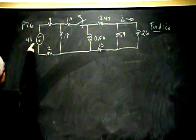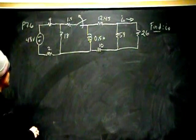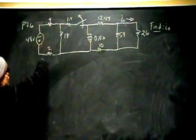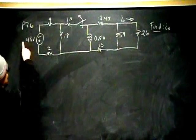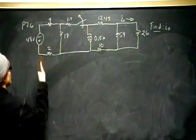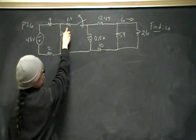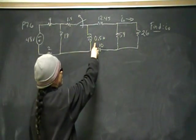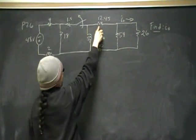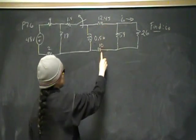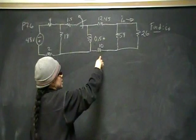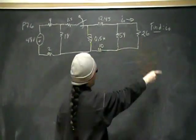So we have a 48 volt independent voltage source going in this direction, so that's really negative 48 volts in that direction. And this is 4 ohms, 2, 18, 1.5. We have a 0.5 Henry inductor and 12.45 here and 10 ohms here, 54 in parallel to 26.